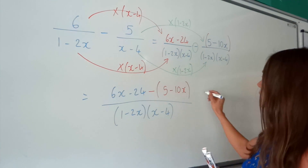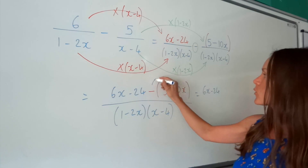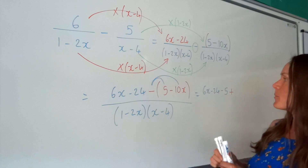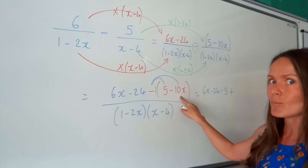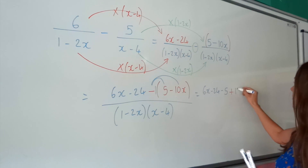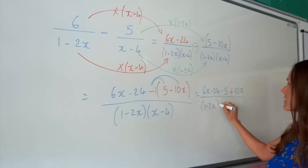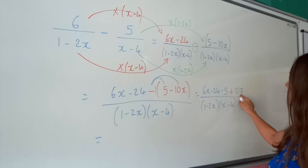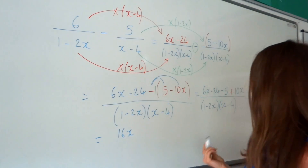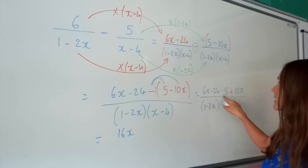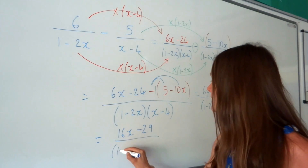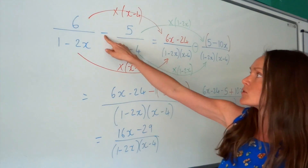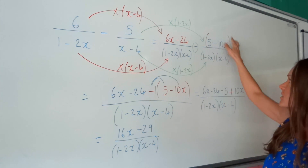So now I'm going to work it out. I've got 6x minus 24 stays the same for the moment. Then I've got minus 5. And then I've got a minus times a minus, which is a plus — this is like an invisible one here, so you're doing minus 1 times minus 10x, which is just plus 10x. The denominator we're going to leave factorized like that — we don't need to expand the brackets. Simplify the numerator: we've got x terms, so 6x plus 10x is 16x. Then we subtract the numbers: negative 24 minus another 5 is minus 29. So watch out for those subtracting algebraic fractions because lots of people get caught out when they're subtracting the second part.